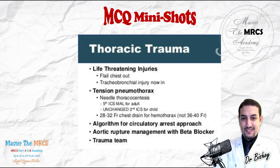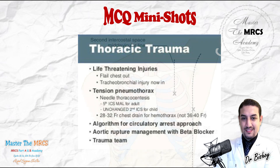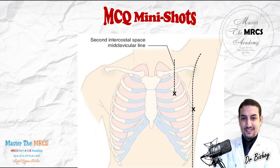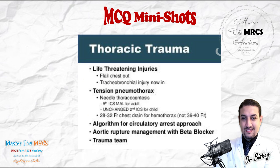To summarize: the first step in both adults and children is thoracostomy. The chest tube in both adults and children is placed in the fifth intercostal space. The key difference is in the initial thoracostomy: in children it is done in the second intercostal space, mid-clavicular line, while in adults it is done in the fifth intercostal space, anterior axillary line.